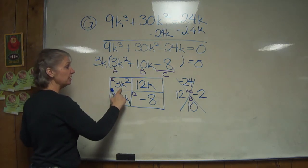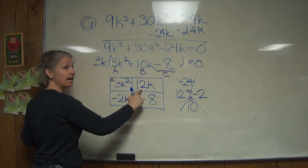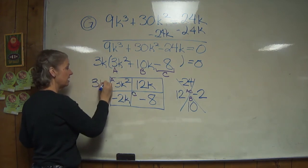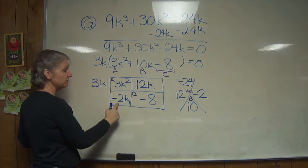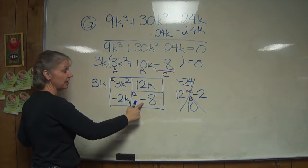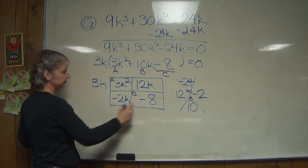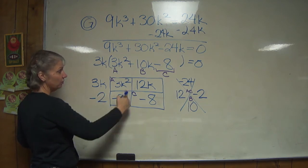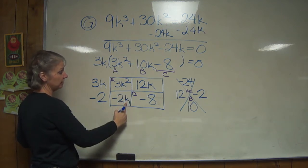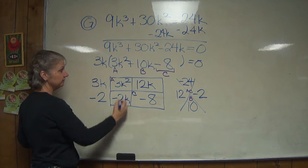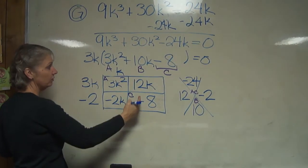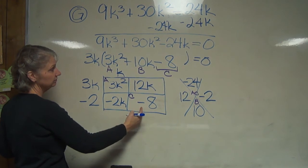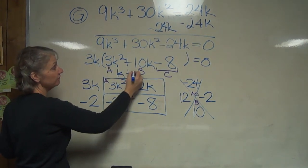So what do 3k² and 12k have in common? 3k. What do negative 2k and negative 8 have in common? Negative 2. What do 3k² and negative 2k have in common? Just k. What do 12k and negative 8 have in common? Just positive 4.